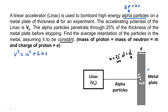We use the third equation of motion: v² = u² + 2as. We know v = 0, and s = x = d/4. We still need to find u, the initial velocity when the particle enters the plate, before we can calculate the retardation a.